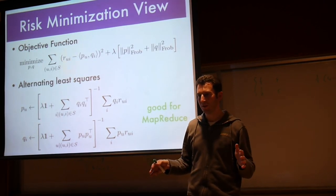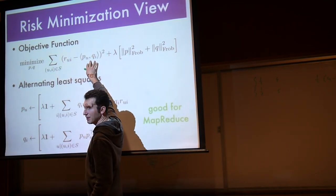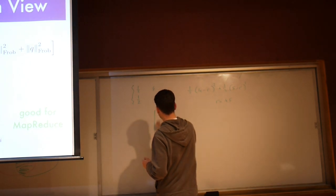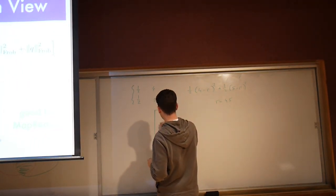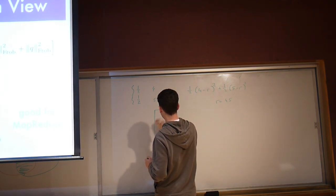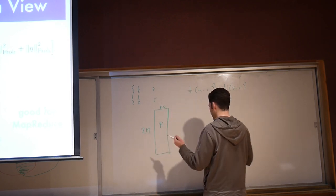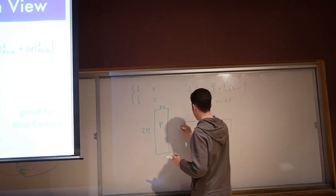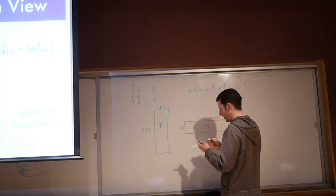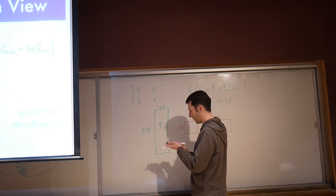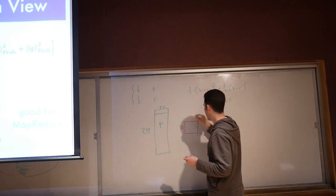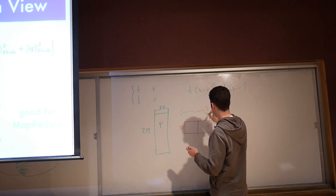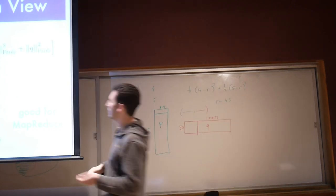It's an inner product here - PU dot QI. What you do is you take this P matrix, it's 50 dimensions here by maybe two million, and you have that Q matrix, 50 maybe by a hundred million. Then you pick out a particular slice here, you pick a particular slice there, and you take the inner product.